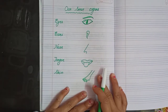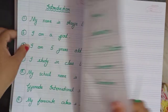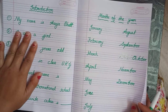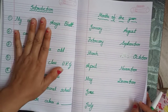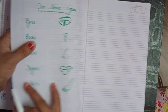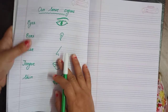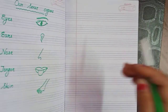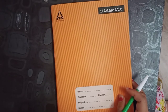Got it children? You have to learn these things: introduction, months of the year, and our sense organs. Got it children? Learn very well. Thank you class, that's enough for today. Thank you.